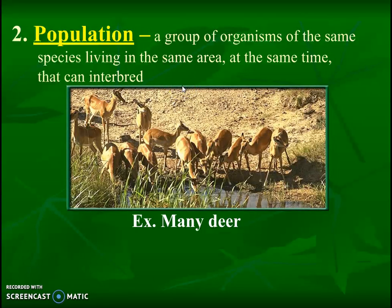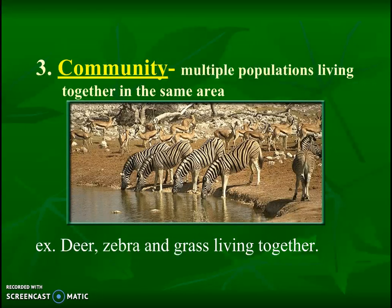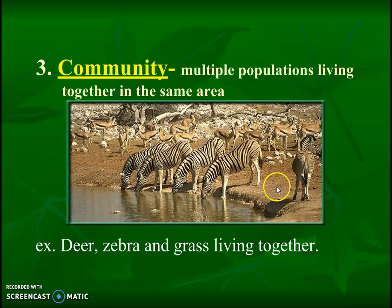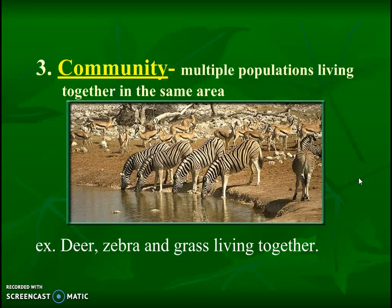What's bigger than a population? The next level is multiple populations in the same area at the same time — that is called a community. So on top of having this type of deer living in the grasslands, we also have zebras. You might have kudu deer, zebras, and even the grass or moss living here. All these living populations in the same area at the same time make up a community.